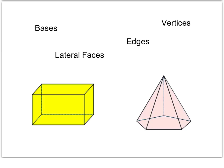You've probably learned about edges and vertices before, but let's review. Edges are the straight lines that connect the solid together. For a rectangular prism, we can count 12 edges, and for a pentagonal pyramid, there are five edges going up to the tip and five edges around the base, giving 10 edges total.